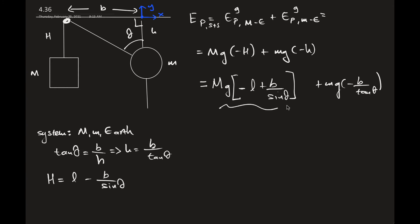If you take a look at this expression: M is a constant, G is a constant, L is a constant, B is a constant — theta is the one variable that will change as the two masses move up and down. So even though I started with two variables, those two actually depend on each other. Using trigonometry, you can write the gravitational potential energy of the system simply expressed using one variable. I can now say this is the potential energy of the system as a function of theta.